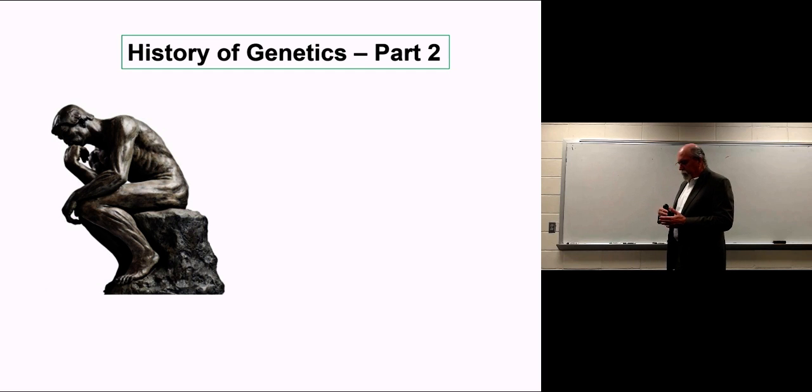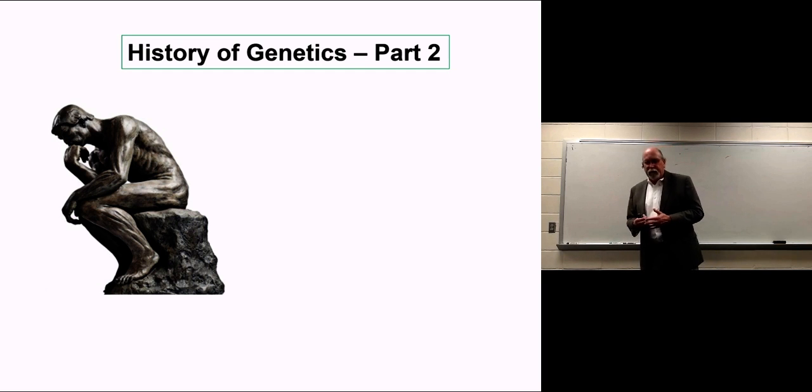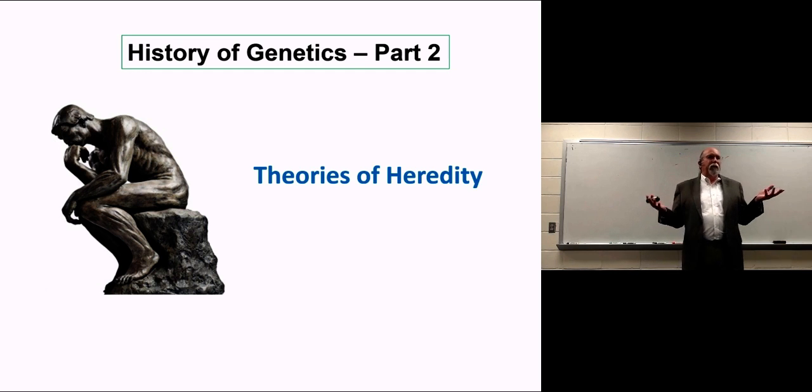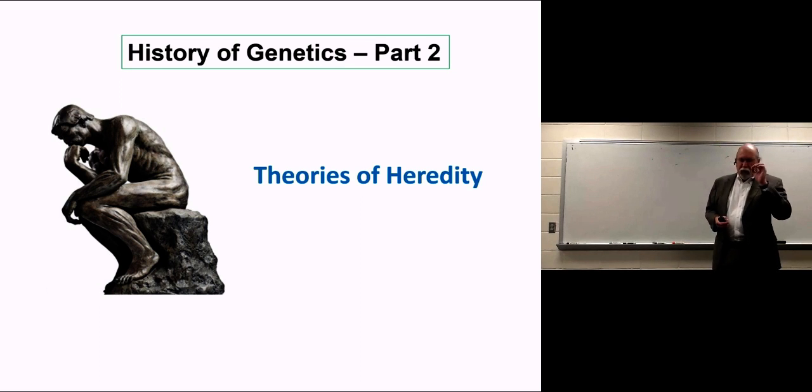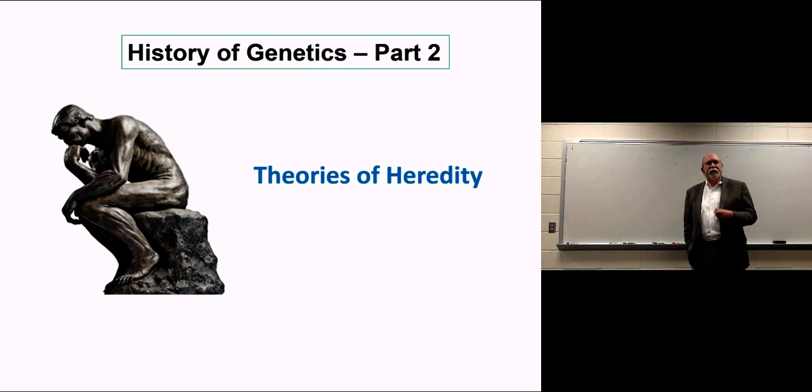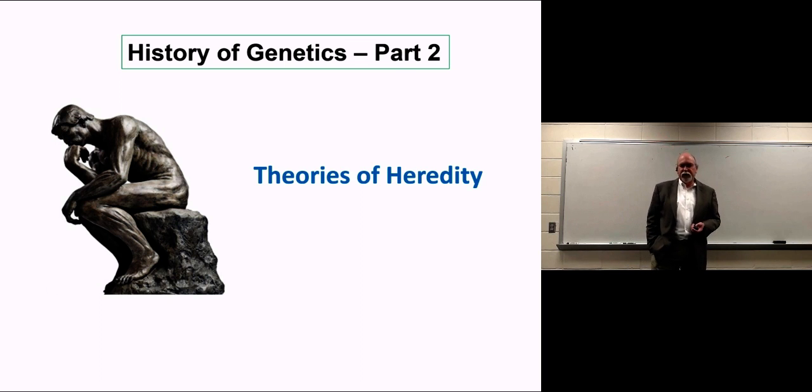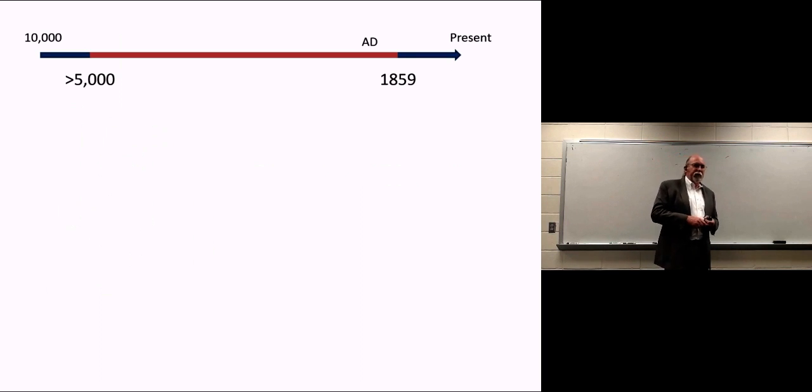From seeing that we could change plants and animals, questions came about - how can we do that? What's making this work? So what developed from this were some theories about how all this goes on, how genetics works, at least the heredity part of genetics. In this part of the lecture, I want to talk about some of these base theories, where they came from, and the history of them.